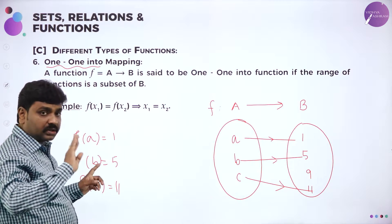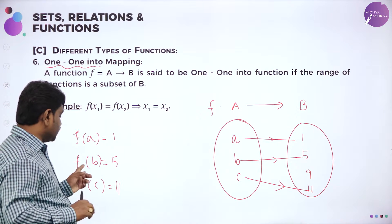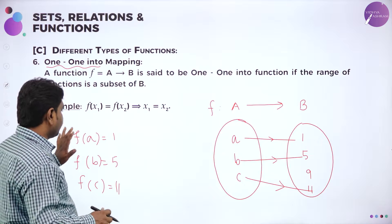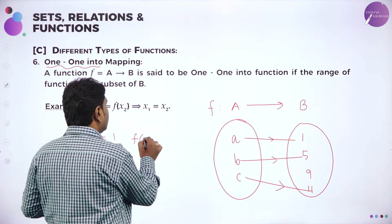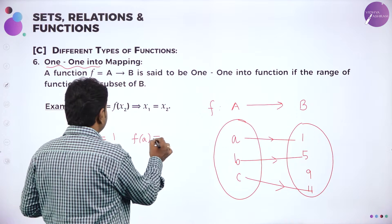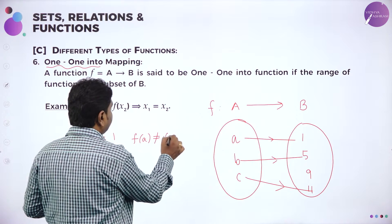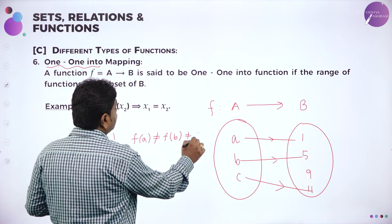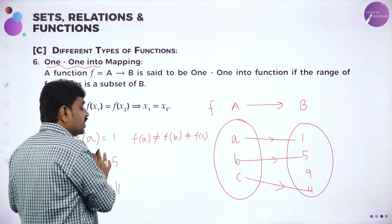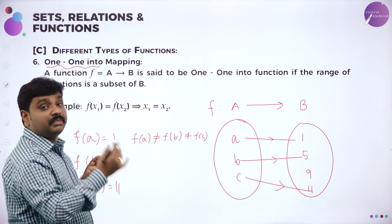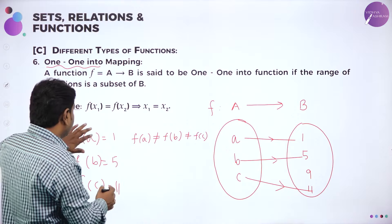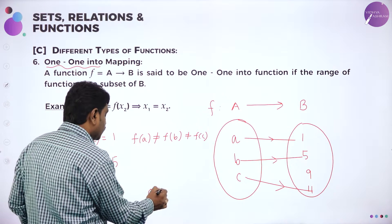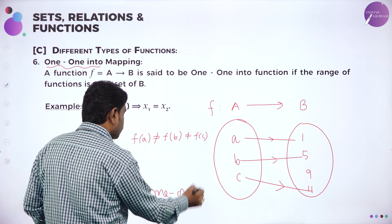Image of A is not equal to image of B, image of B is not equal to image of C. F of A, F of B, F of C are all different — do you agree? F of A is not equal to F of B, which is not equal to F of C. Different elements in domain have different images. Therefore I call this as one-to-one.